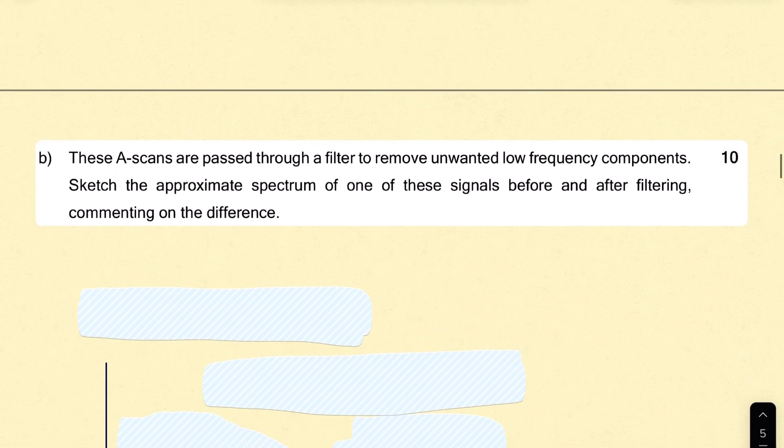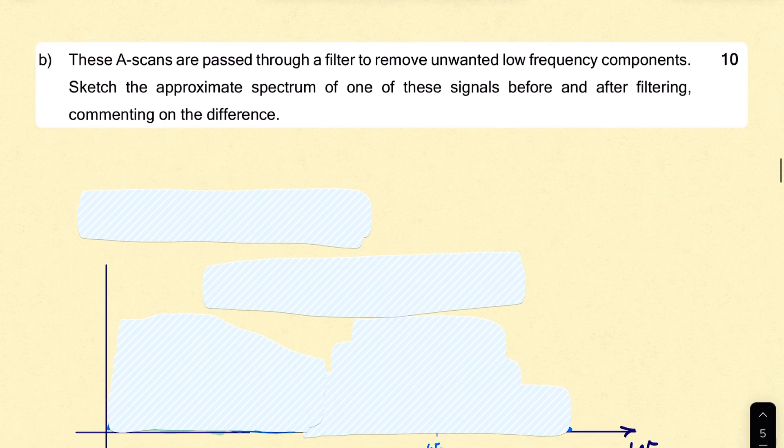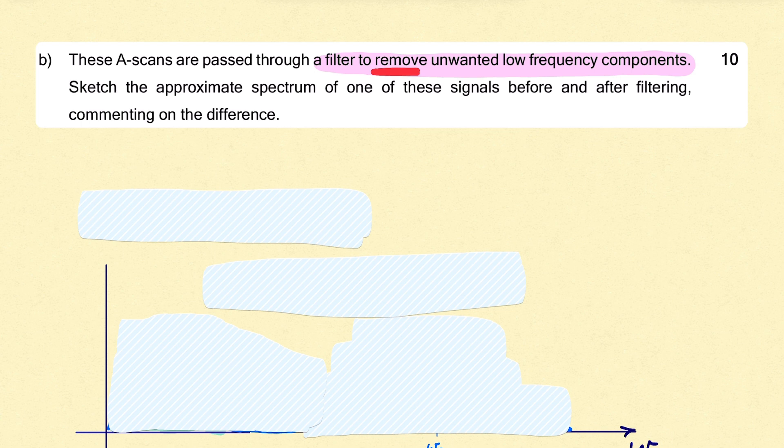Now, part B then speaks about a filter. It says these signals are passed through a filter to remove unwanted low-frequency components. So if it's removing, if it's blocking low-frequency components, then it will be allowing high-frequency components. So it's a high-pass filter that we want. We want to pass it through a filter that might look like this, that will allow high frequencies to pass but block low frequencies.